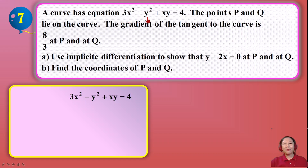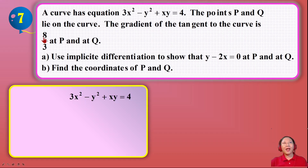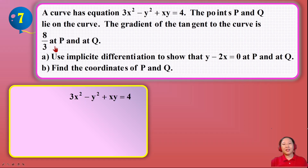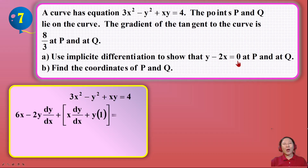Question seven: the curve has equation 3x² minus y² plus xy equals 4, at points P and Q which lie on the curve — that is the keyword, lies on the curve. The gradient of the tangent to the curve is 8/3. So the gradient is already given. They ask us to use implicit differentiation and show that y minus 2x equals 0 is satisfied at P and Q.